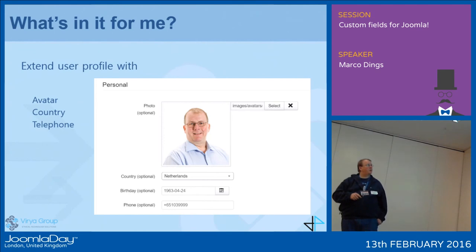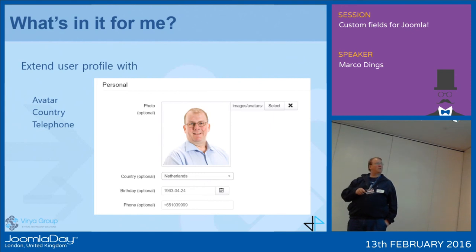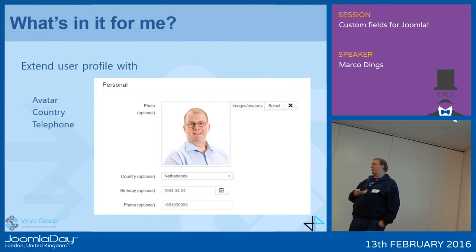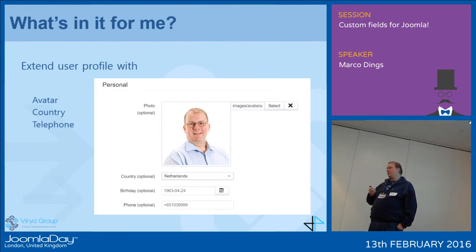For example, you can extend your user profile with whatever — an avatar, country, telephone number. Here you see a snapshot: you have a Joomla media field, so you can upload your image from there and have it inserted. You can have a dropdown list for the country, a birthday, and a phone number field. The phone number field would throw an error message if you add generic characters to it. This is something that is the basic Joomla field subject, and something I think we all encounter quite often.